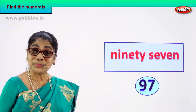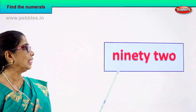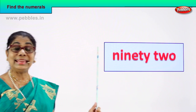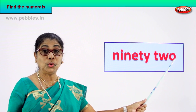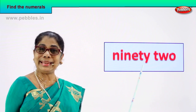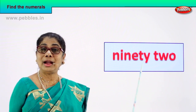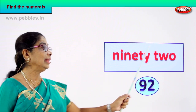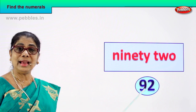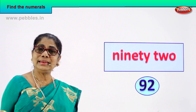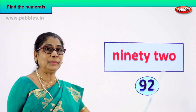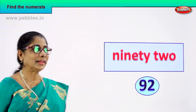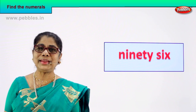Shall we take another number name? Read: N-I-N-E-T-Y is ninety, T-W-O is two — 92. Read again: 92. Now how will you write 92 as a numeral? 9 and 2 — 92. 92 is the numeral for this number name. Did you enjoy?